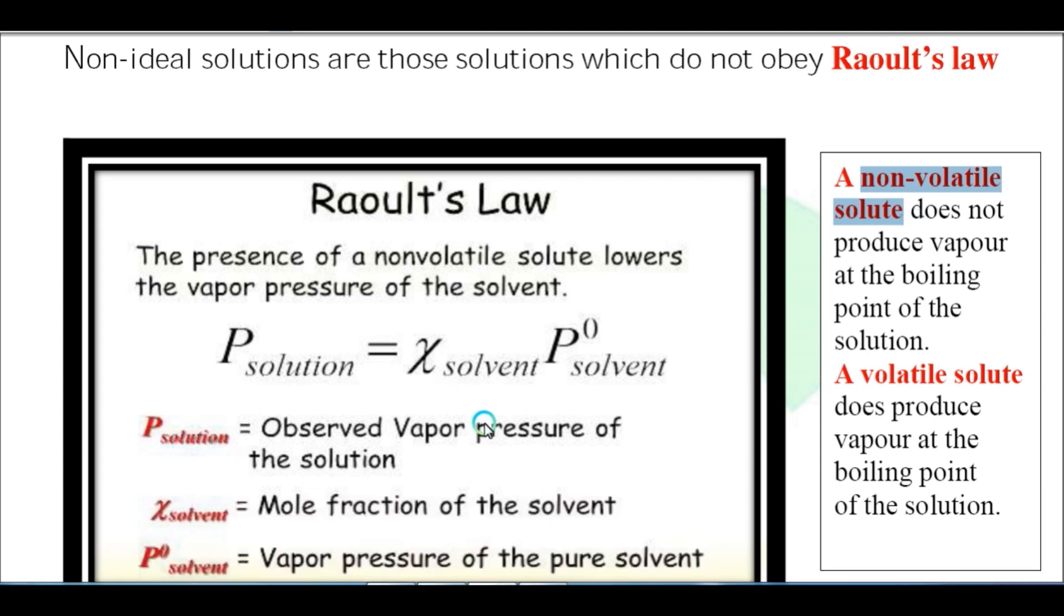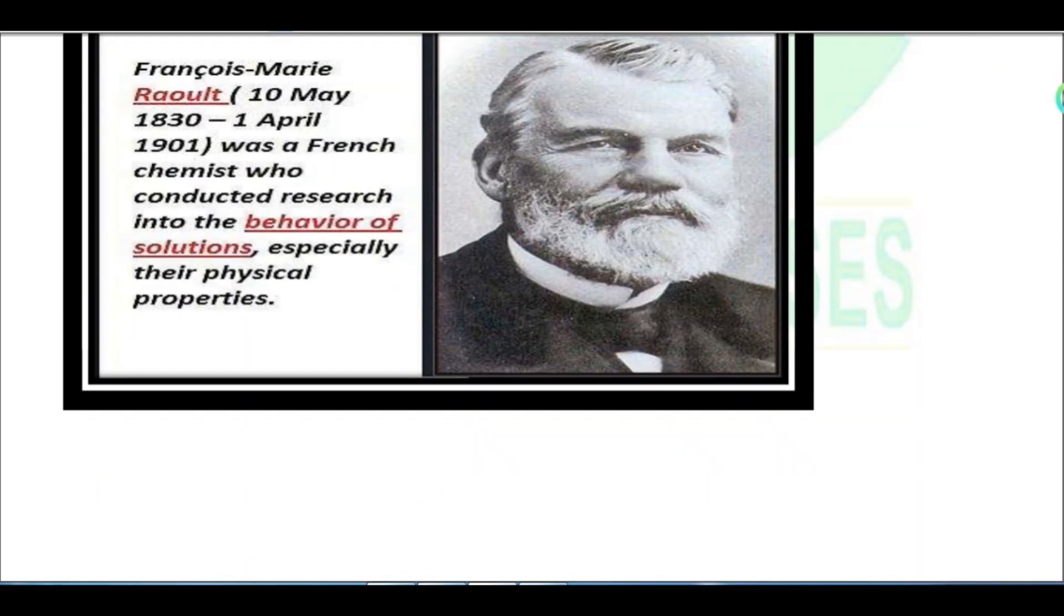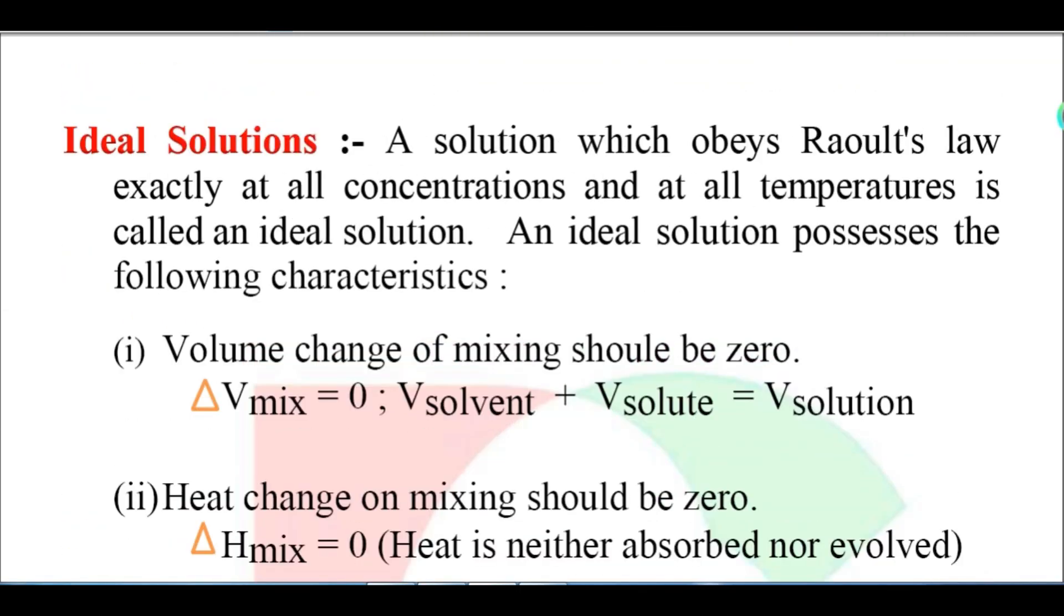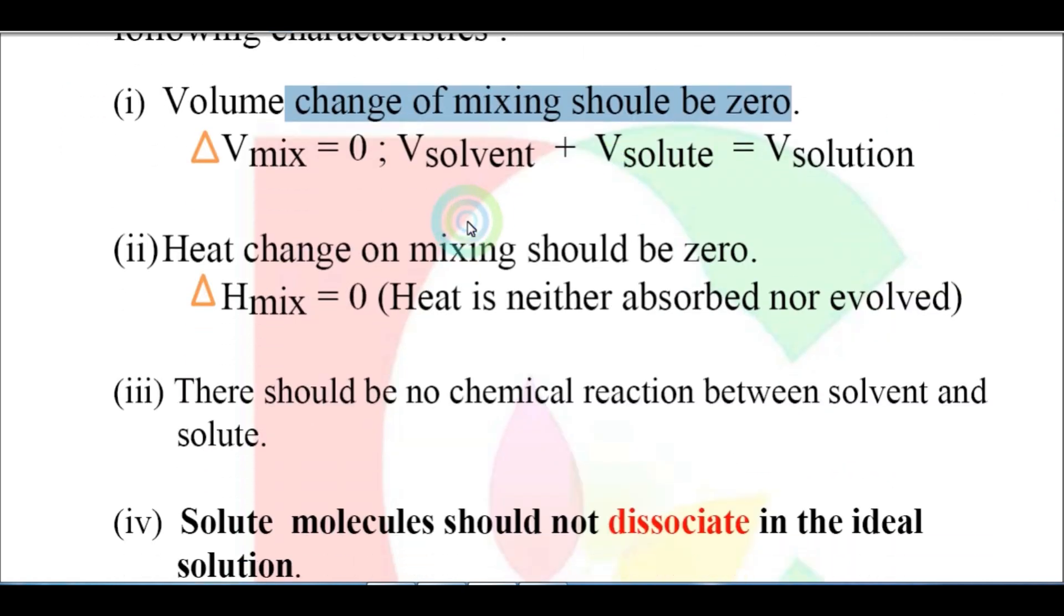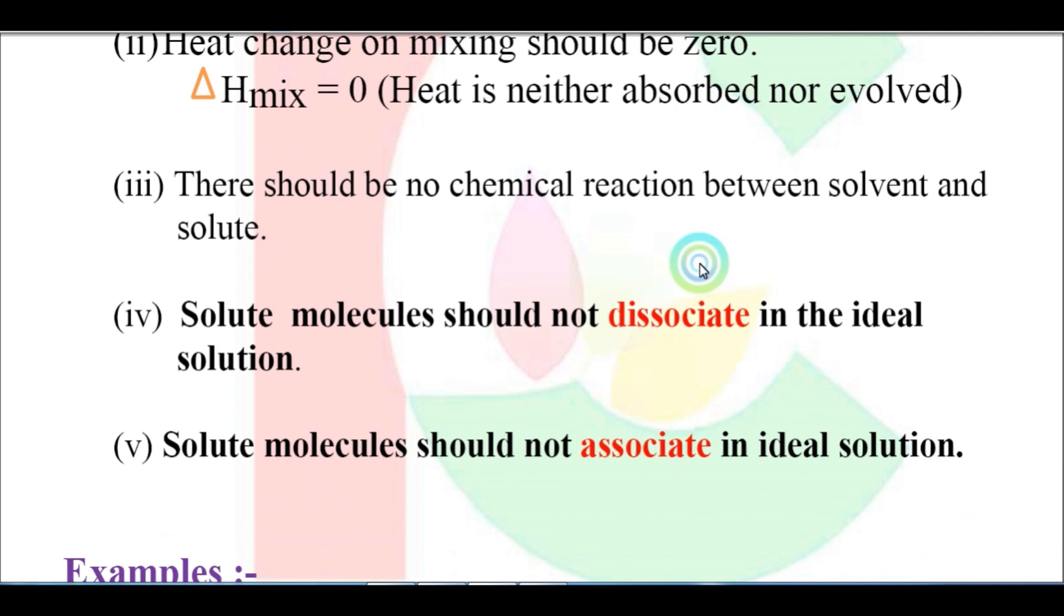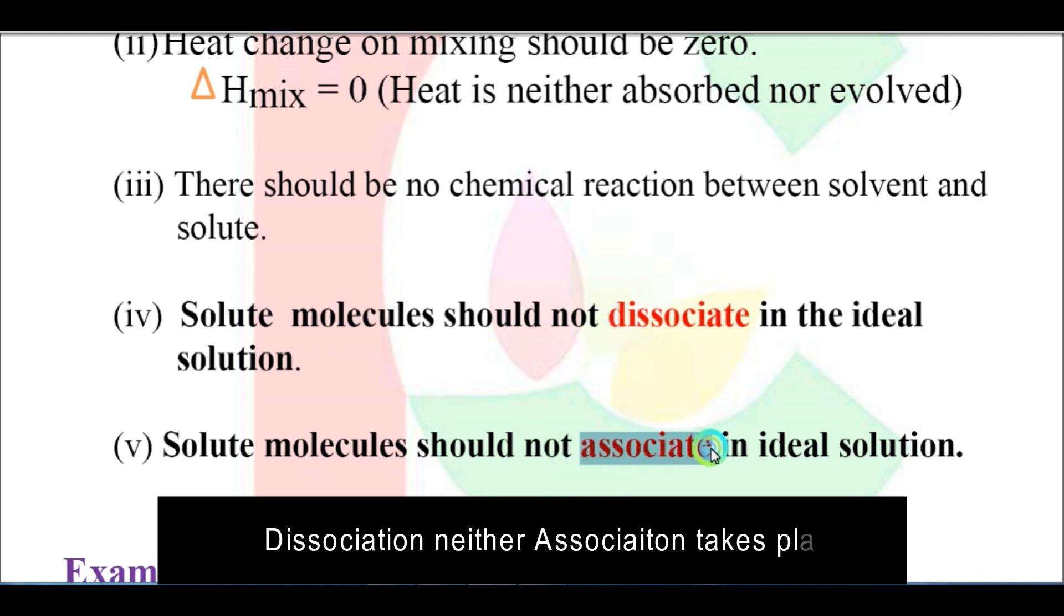Raoult's law is applicable for both volatile and non-volatile solutes. An ideal solution means one which obeys Raoult's law. For ideal solutions, there are conditions: the volume change on mixing should be zero, delta V mix equals zero, and the enthalpy change or heat change on mixing should be zero, delta H mix equals zero. The solute and solvent should not undergo chemical reactions, the solute should not dissociate, and the solvent should not associate.